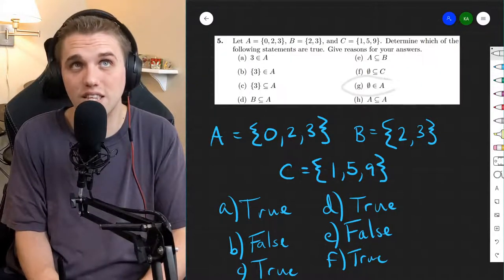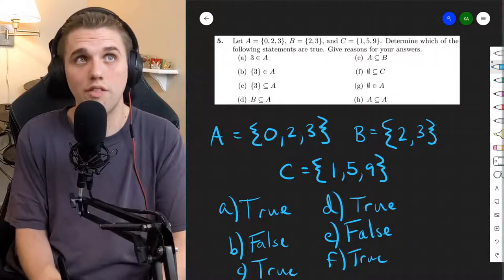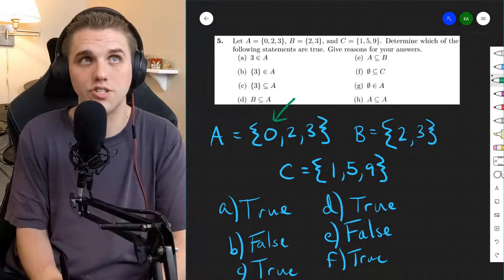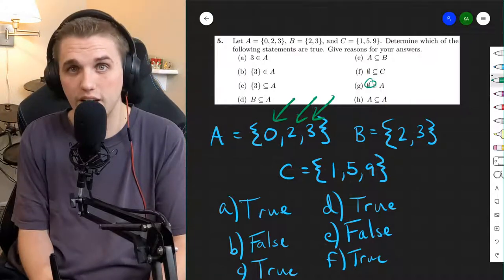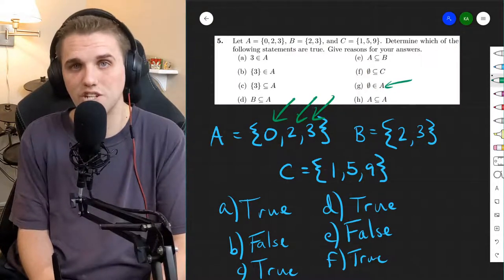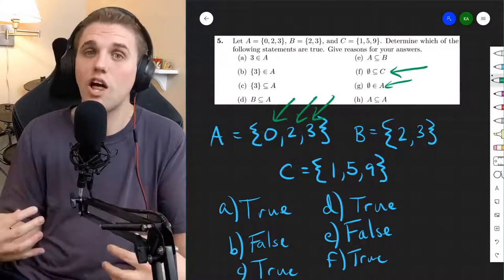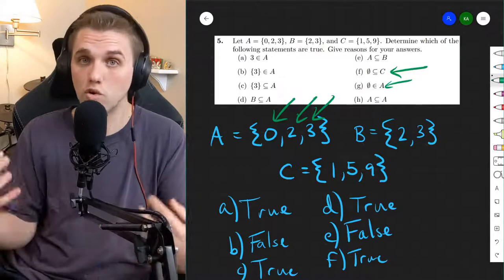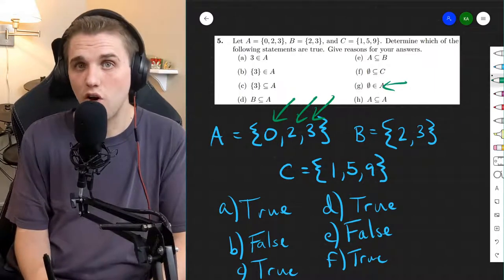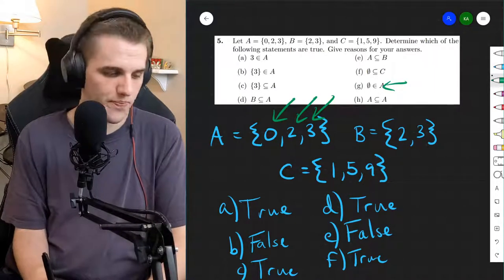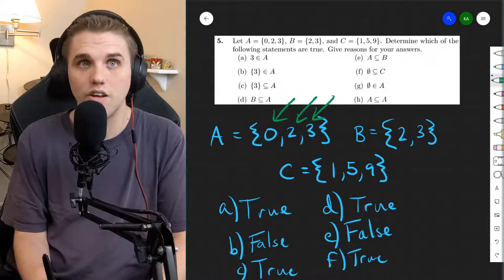Now, the next one. Is the empty set a member of A? Well, what are the members of A? The members are 0, 2, and 3. Did you see the empty set there? No. Keep in mind, this is not an implication. This subsets have an underlying implication to them, a universal quantification as well. Membership, not so much. Membership does not involve quantification. At least not in the same way, I should say. So G is false.